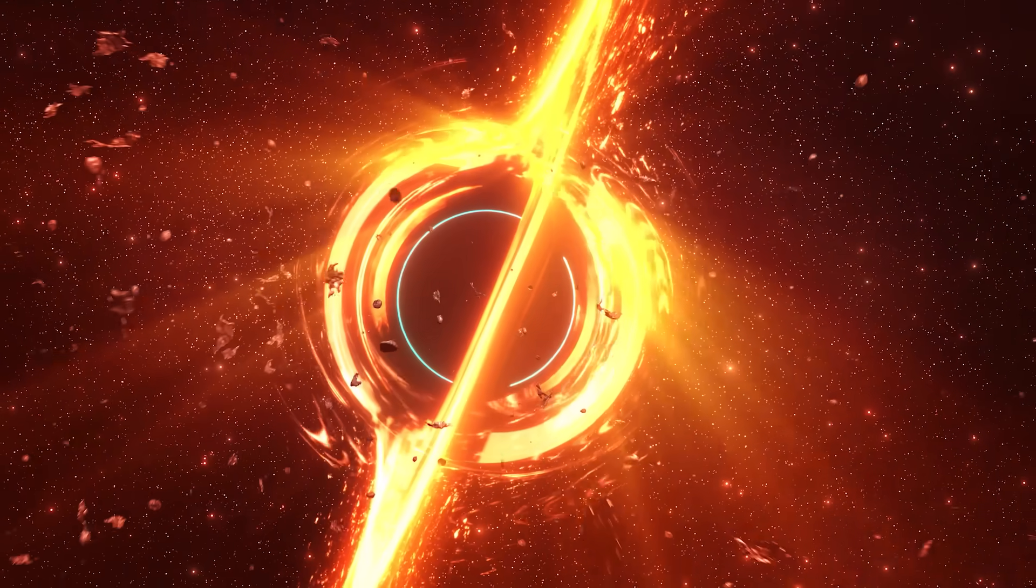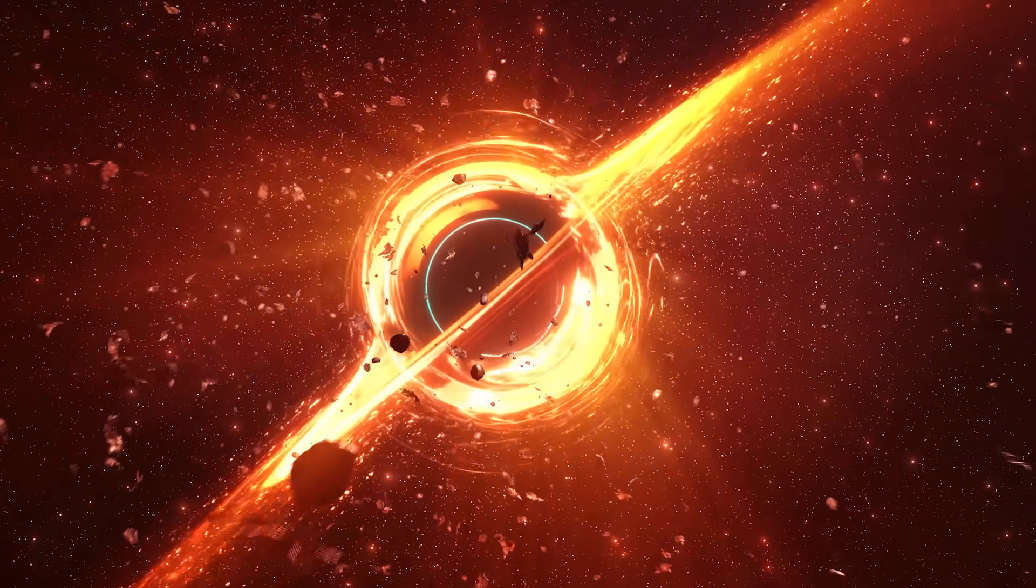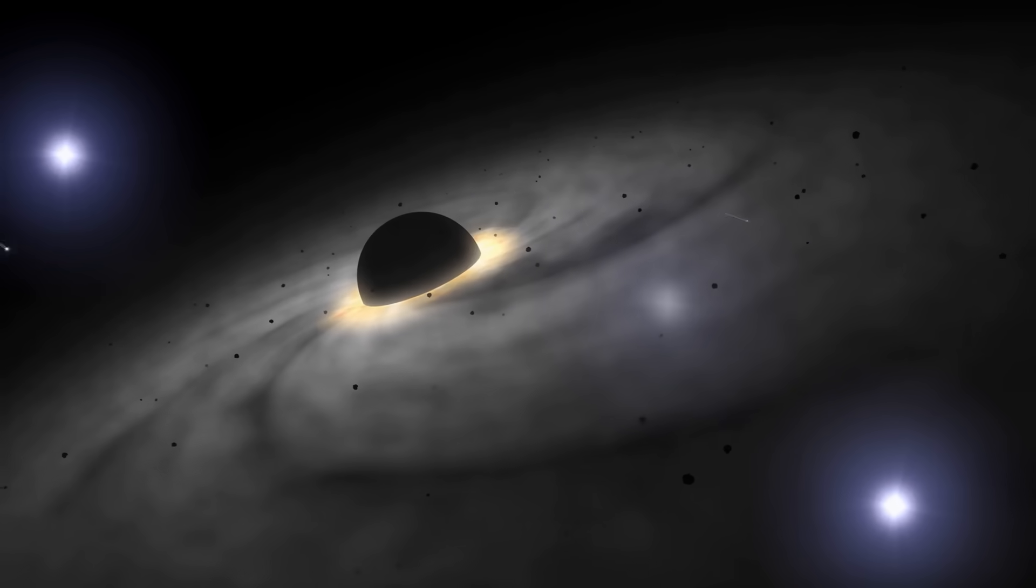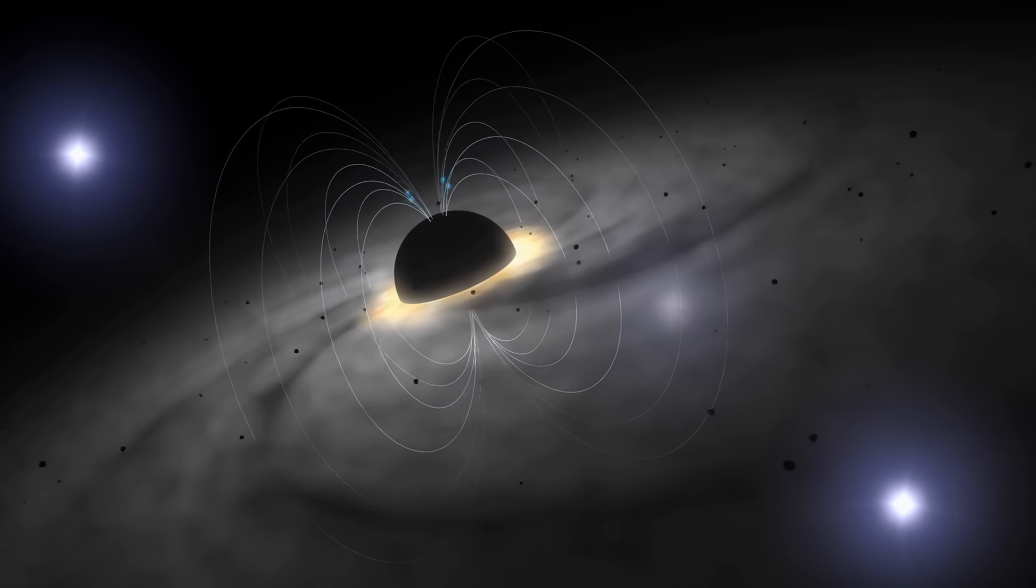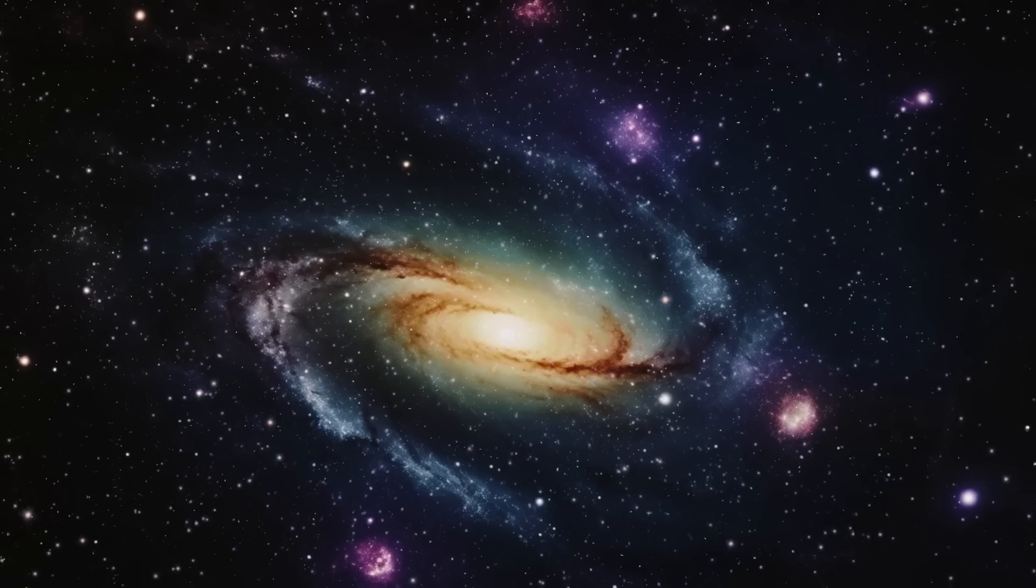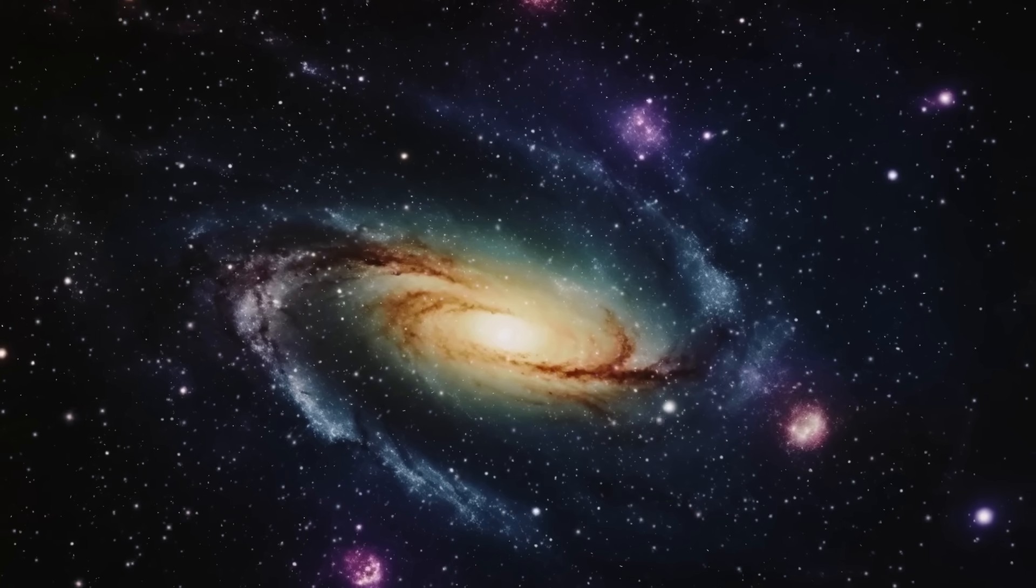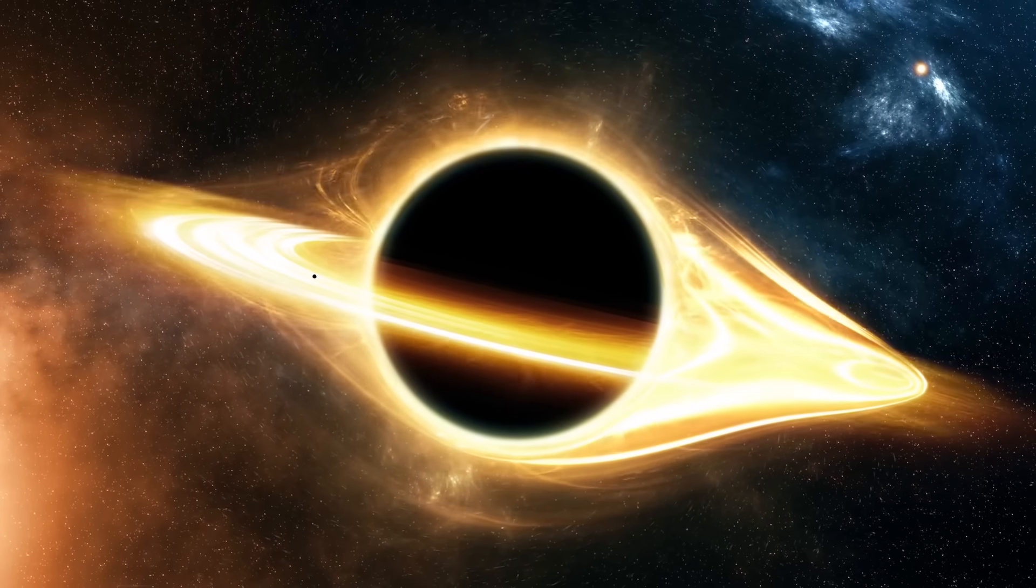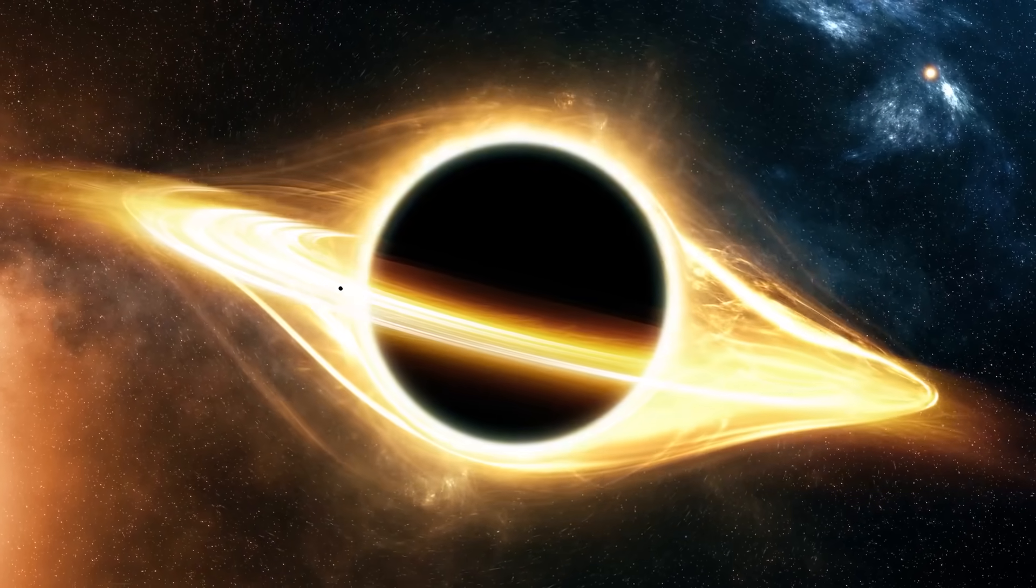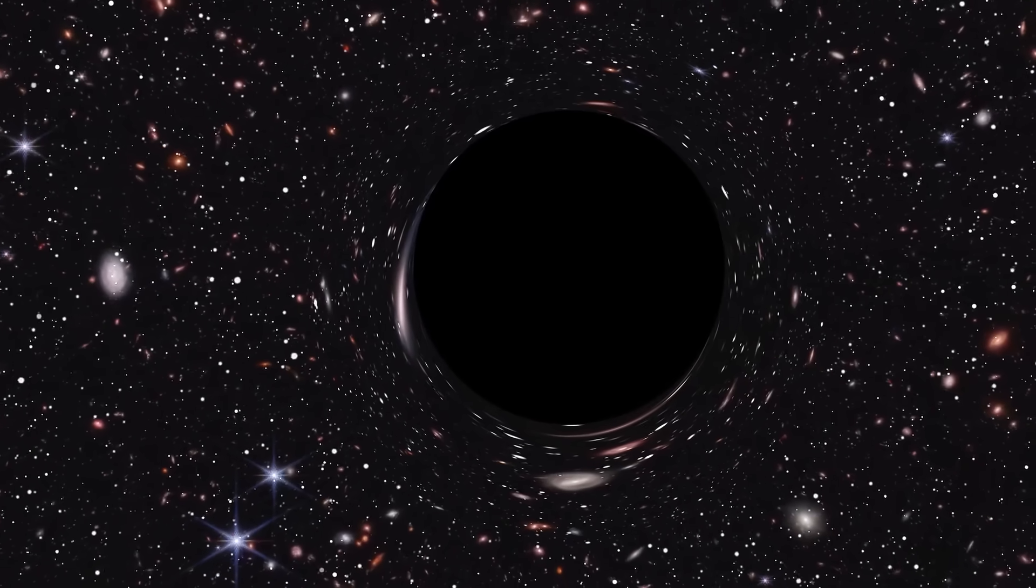If this black hole rotates, as almost all known black holes do, it could have passed on its angular momentum to the emerging universe. The observed rotational asymmetry of galaxies would then be nothing more than a fingerprint of this mother black hole and a cosmic legacy that is still visible today.